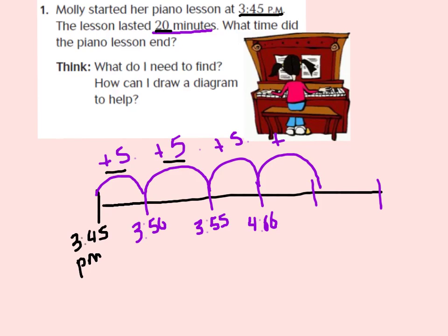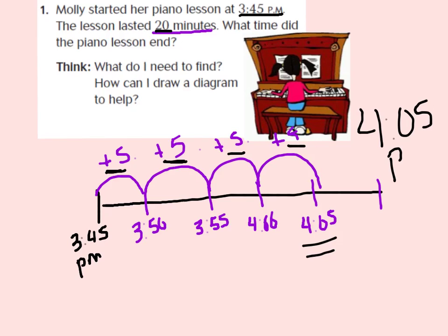That's 5 more minutes. Now if I add 5 minutes to 4 o'clock, I will be at 4:05. Now I've gone 5, 10, 15, 20 minutes — that's how long her lesson lasted. So I know that my end time will be 4:05 p.m. That's what time her piano lesson ended.